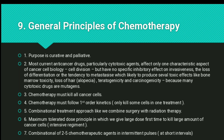The seventh principle is the combination of two to five chemotherapeutic agents given in intermittent pulses — at short intervals. We generally take two to four different agents and administer them to the patient in a very short period of time.